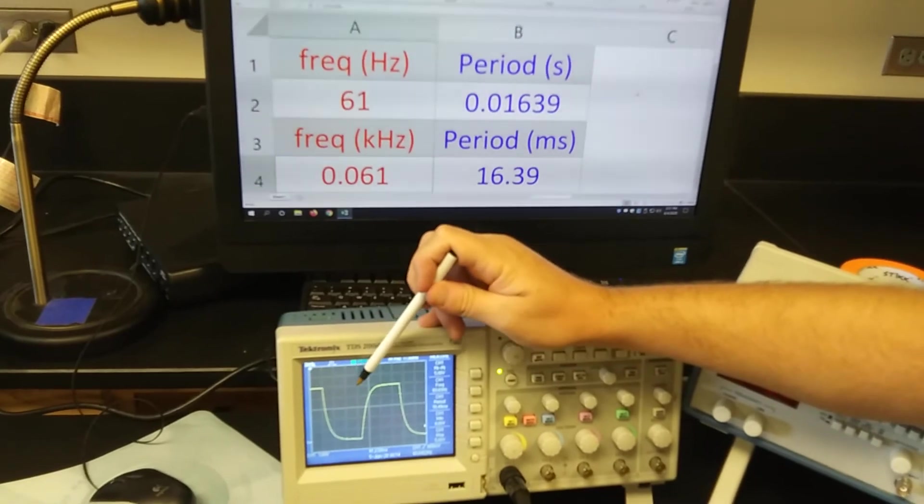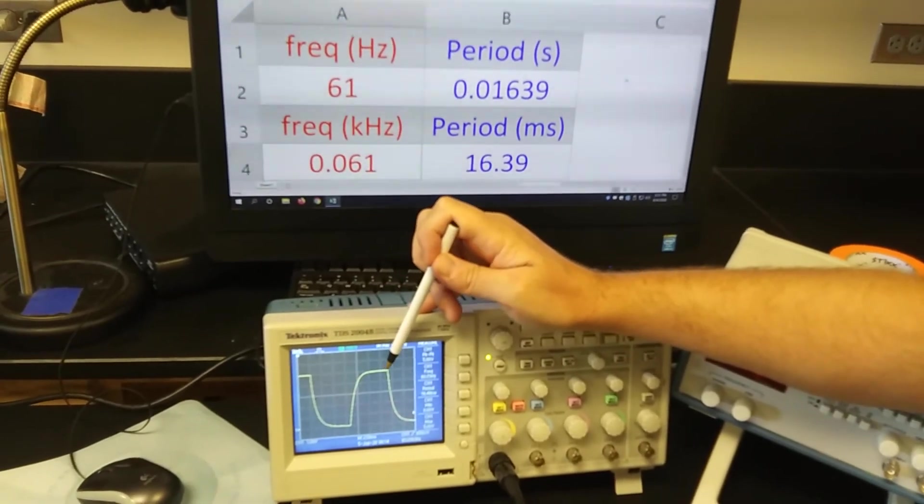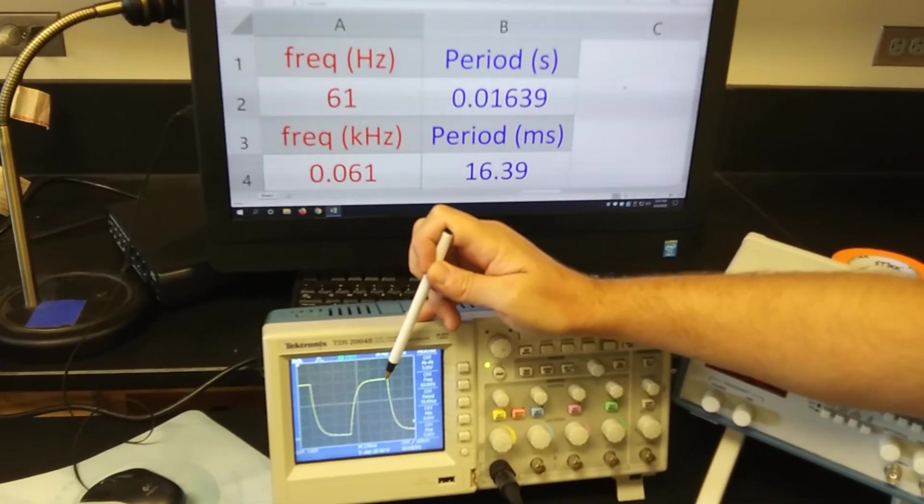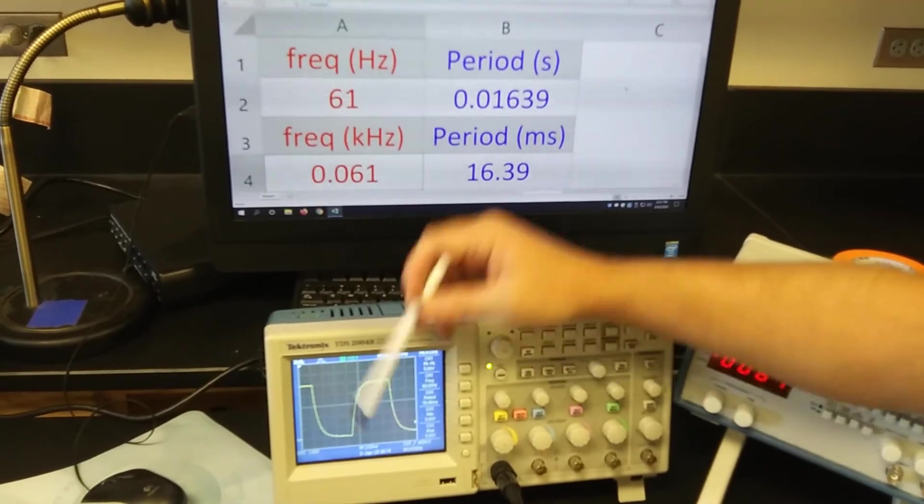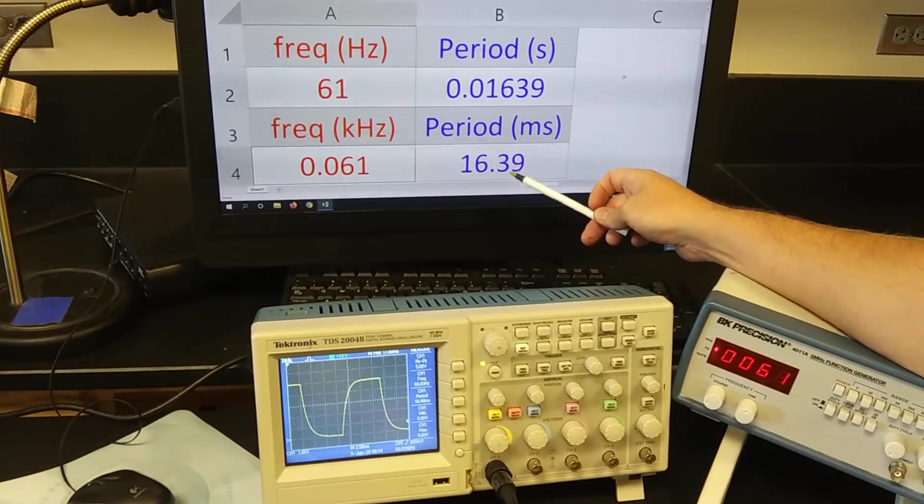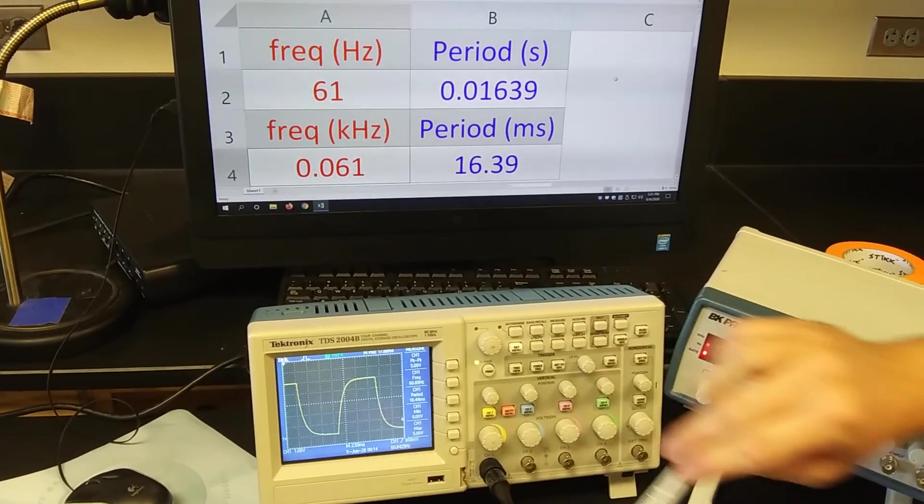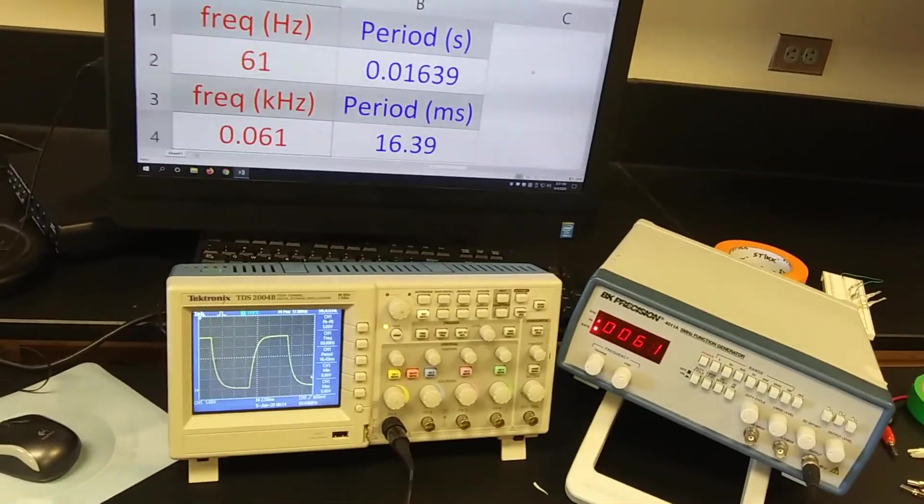So we see that there's 1, 2, 3, 4, 5, 6, 6 and a half of these at 2.5 milliseconds is approximately 16 milliseconds, which corresponds to the screen. All right, you're ready for lab.